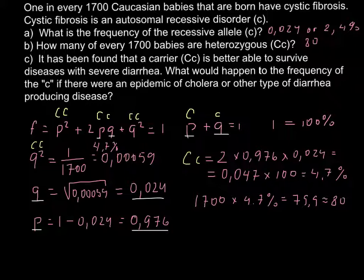Now we're left with the last question. It has been found that a carrier, capital C small c, is better able to survive diseases with severe diarrhea. What would happen to the frequency of the small c allele if there were an epidemic of cholera or other type of diarrhea producing disease? This is obvious that people who are not fit, like those with genotype capital C capital C, their genotype would decrease, and the heterozygous genotype that represents only 4.7% would increase.